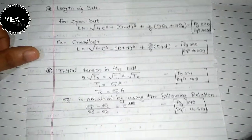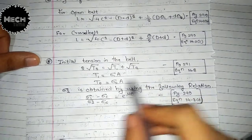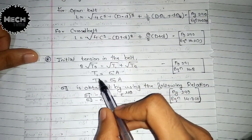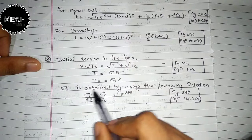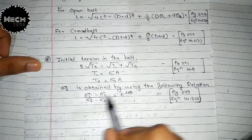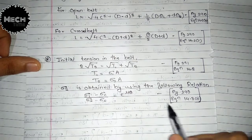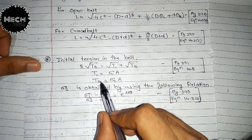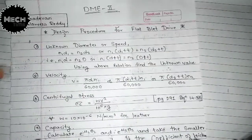Step 8: find the initial tension in the belt, from page 291, equation 14.8: T₀ = (√t1 + √t2)² / 2. Here t1 = σ₁ × A and t2 = σ₂ × A. σ₂ is found from the relation on page 290, equation 14.3d, using known values of σ₁, σc, and e^(μθ). Substituting gives t2, and then the initial tension T₀ is obtained.